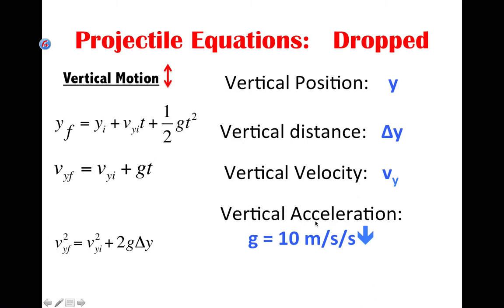Vertical acceleration is due to gravity, so we're going to be easy on ourselves and use just a rounded 10, rather than 9.8 for the calculations that we do for this unit. So we're going to use 10 meters per second per second down for the acceleration of gravity. Typically we will call this a negative number because we'll call down negative.